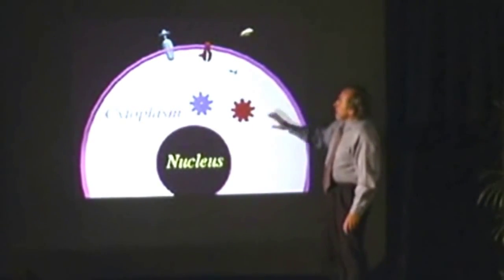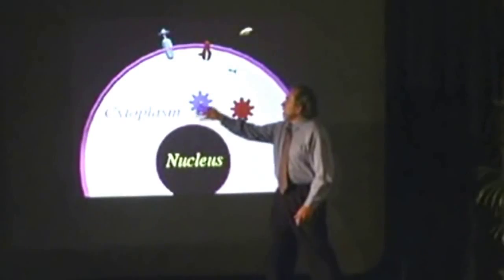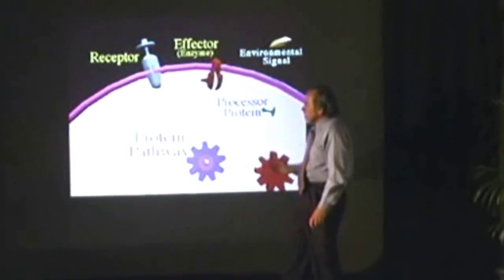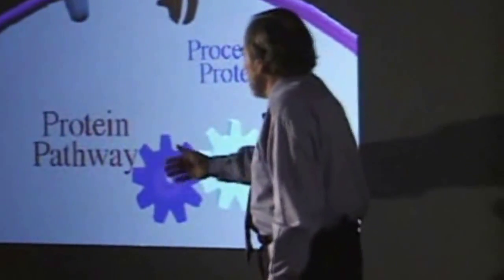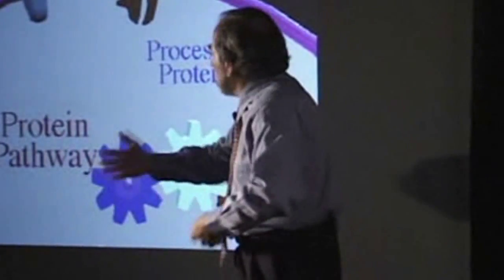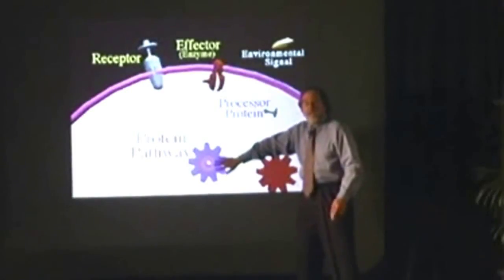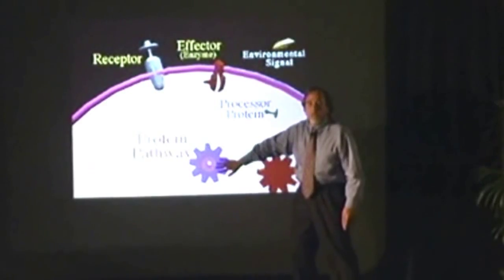So basically, here are proteins in the cell. Let's say that these proteins carry out a specific function, respiration or digestion. We call it a pathway. So let's say it's a muscle contraction. These proteins, when activated—what activates the protein? The signal activates the protein.